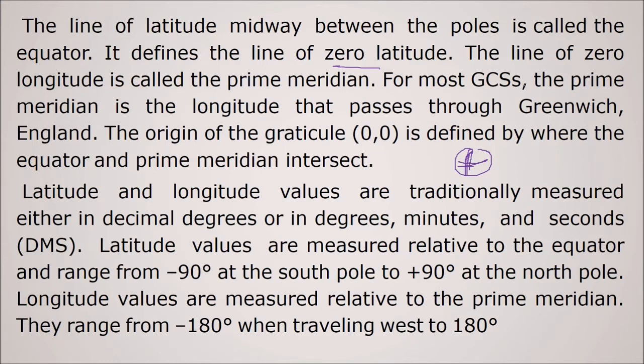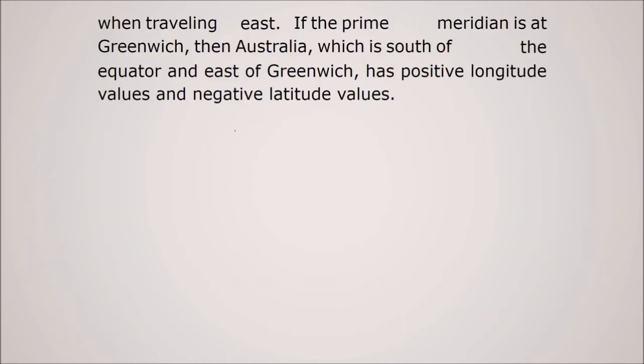Here the latitude is zero. So the line of zero longitude is called the prime meridian which is specific for the world. And for most cases, the prime meridian is the longitude that passes through Greenwich, England. The origin of the graticule is here is zero zero. It's defined by where the equator and the prime meridian intersect like this. So the latitude and longitude values are traditionally measured either in decimal degrees or DMS degree minute second. Latitude values are measured related to the equator that ranges from minus 90 degree south to plus 90 degree to the north point. And longitude, these angles are measured related to the prime meridian. They range from minus 180 degree to plus 180 degree. So it covers 360 degree, this covers around 180 degree.